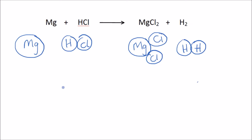So what's the problem with this? Well, we can't magically create an extra chlorine and an extra hydrogen from nothing — it's just not possible. So if one molecule of magnesium reacts with one molecule of hydrochloric acid, we can't possibly produce a molecule of magnesium chloride and a molecule of hydrogen.